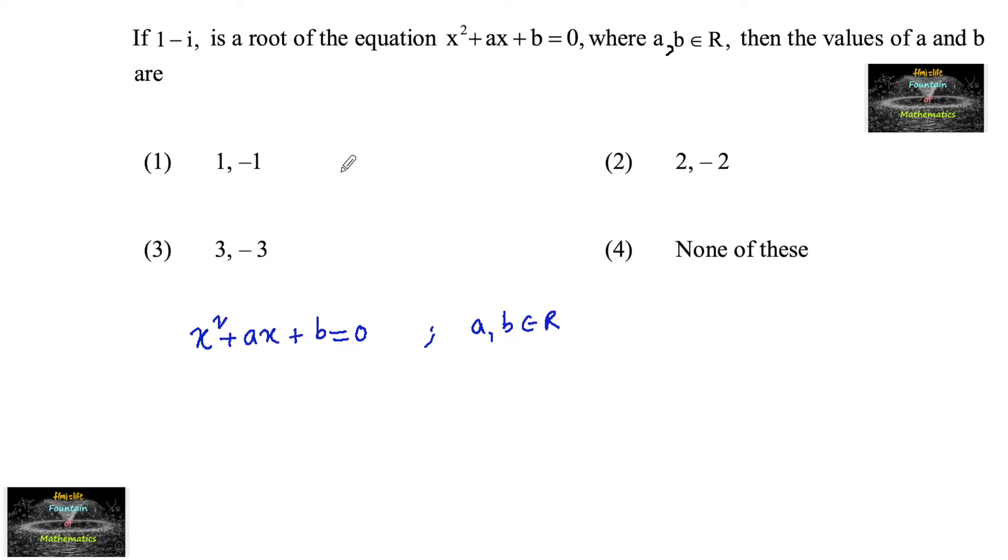Since for the equation 1-i is a complex root, we know that for an equation ax square plus bx plus c equals to 0, where a, b, c are real numbers.